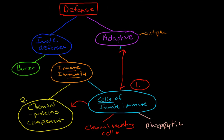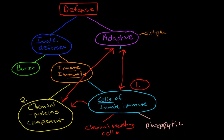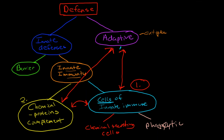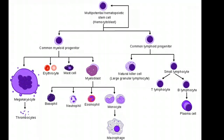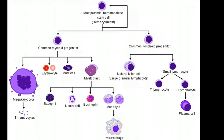The adaptive immune system and all these parts are interconnected and work together as one big system — we're breaking it out just to make it easier to understand, but keep in mind they all work together. To talk about the cells of the innate immune system, one of the easiest ways to think about it is the chart showing the development of cells in the blood — white blood cells and red blood cells — otherwise known as hematopoiesis.